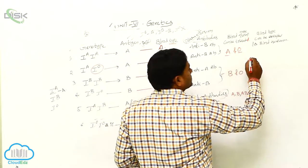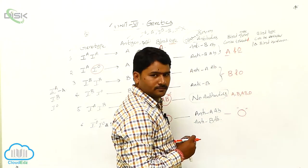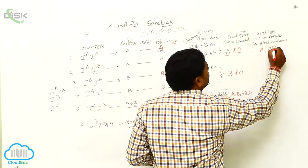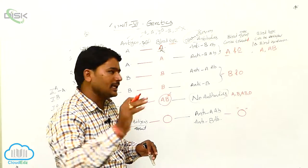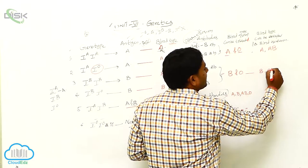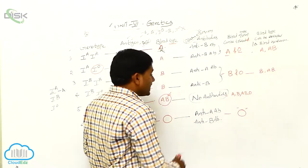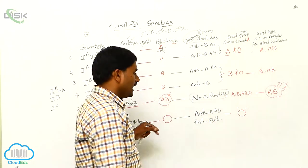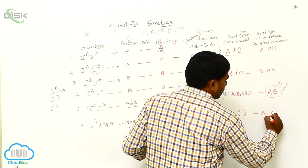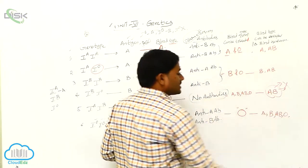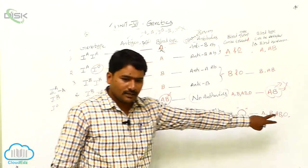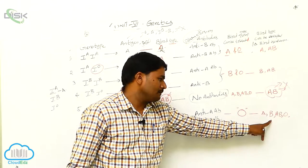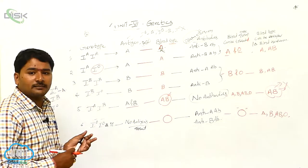Now, to whom can we inject each blood group? A can be injected to A and AB. B can be injected to B and AB. AB can be injected only to AB — we cannot inject AB to anybody except AB individuals. O can be injected to A, B, AB, and O. So O can be injected to all blood groups. This is a detailed chart about blood types and compatibility.